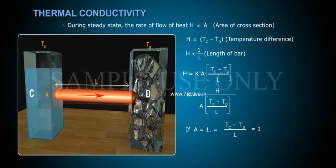If A is equal to 1, and Tc minus Td by L is equal to 1, therefore K is equal to H.